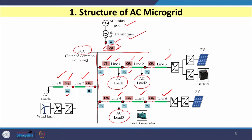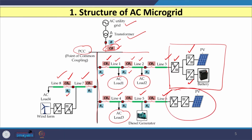On the generation side, there is a PV-based generator with battery connected through DC-to-DC converters and then DC-to-AC converters. We can also connect a diesel generator directly, or connect a wind farm through AC-to-DC and then DC-to-AC converters. This is the structure of the AC microgrid.